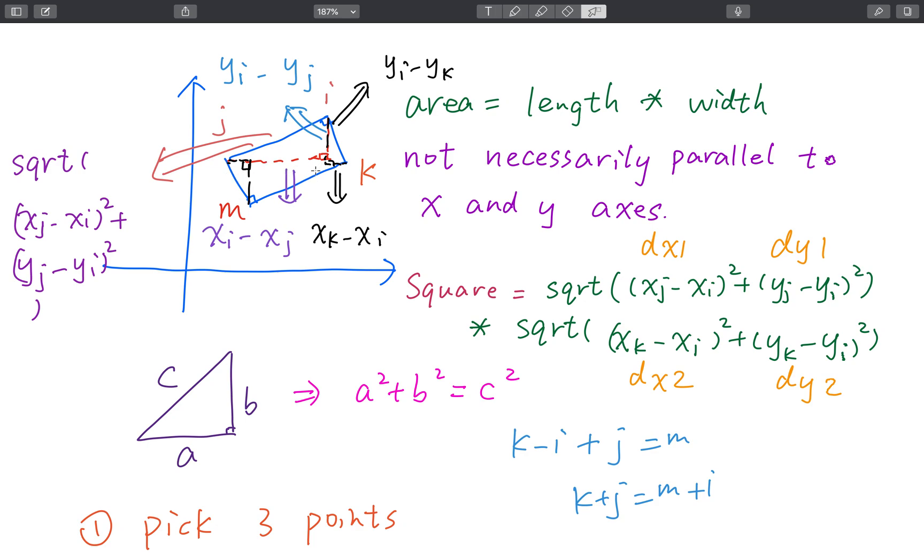So first, the area should just be the distance between IJ times distance between IK. So how to get the distance between IJ? We should just be the XI minus XJ square plus YI minus YJ square, and we get their square root. And use this square root times this square root, just this formula.